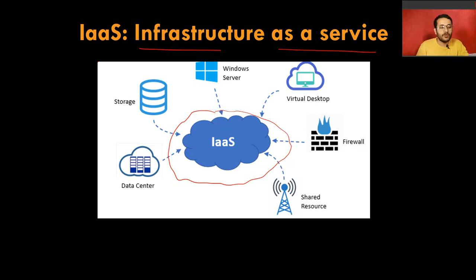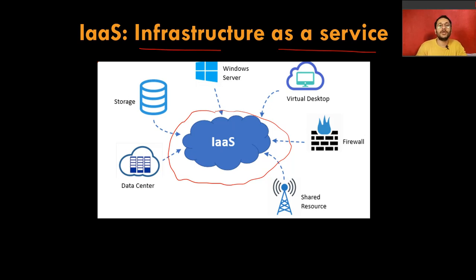Suppose you have an application on your local system and you want to run it on the cloud. For a PHP application you need a PHP compiler and environment; for Java you need JVM and JDK and a server to deploy. For a Spring Boot application you need the Spring Boot framework, Java, and a server like Tomcat to deploy your service. That's the kind of setup needed when you want to deploy to AWS under IaaS.